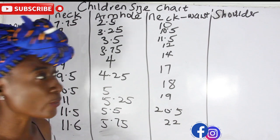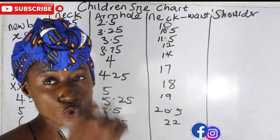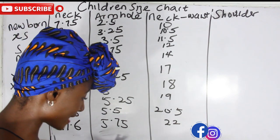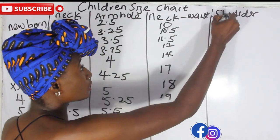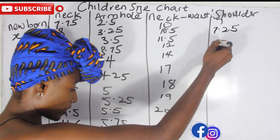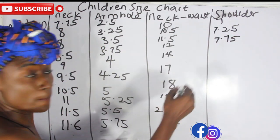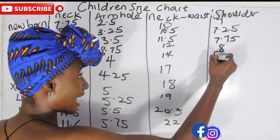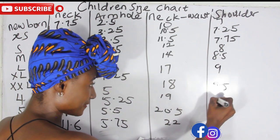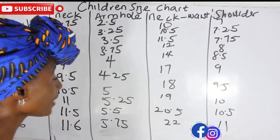Now, the reason I added the shoulder measurement to this tutorial — even though we covered it in the first video — is so that I can explain the neck part better. So let's go ahead with the shoulder measurements. For a newborn the shoulder is 7 inches; for extra small we have 7.25; for small we have 7.75; for medium we have 8; for large we have 8.5; for extra large we have 9; then 9.5, 10, 10.5, and 11 inches.